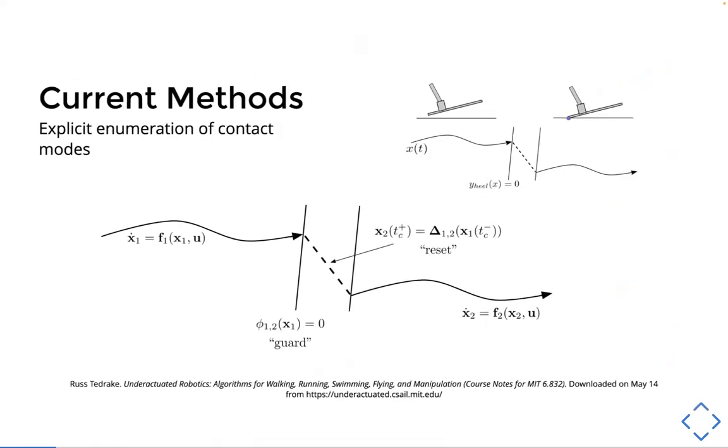So there's some different methods that people use to deal with this difficulty. The first is an explicit enumeration of the different contact modes. In this, we explicitly enumerate all the different modes, as well as the dynamics of each mode, and have some kind of event detection to let you know when you need to switch the new set of dynamics.